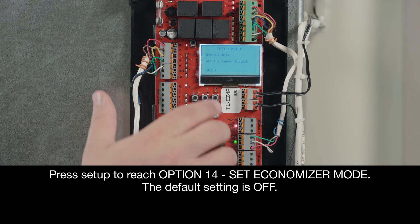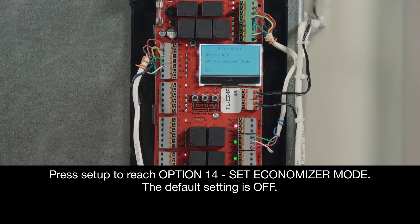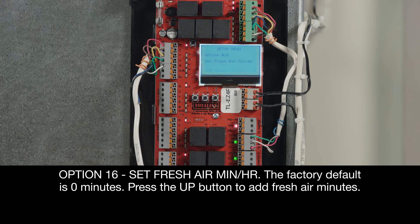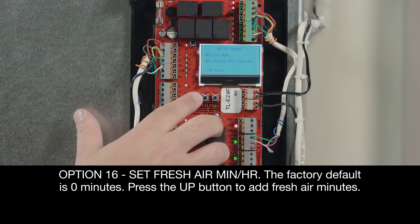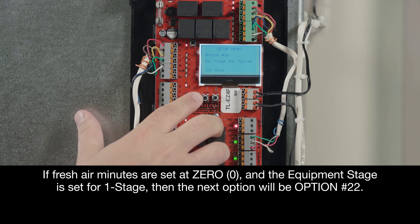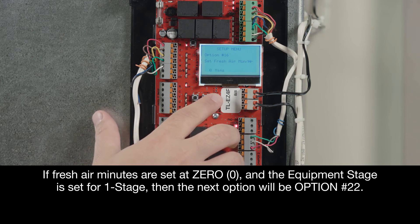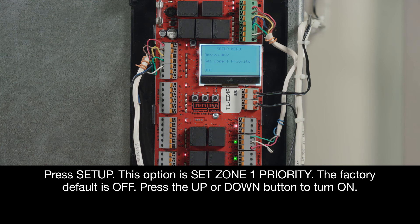Now we'll press Setup to reach Option 14, Set Economizer Mode. The default setting is OFF. And let's go to Option 16, Set Fresh Air Minutes Hours. The factory default is 0 minutes. Press the Up button to add fresh air minutes. If fresh air minutes are set at 0 and the equipment stage is set for 1 stage, then the next option will be Option 22. So press Setup to get there.